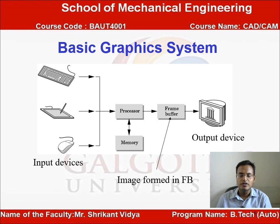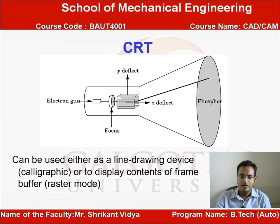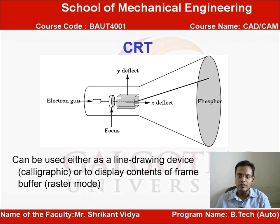The basic graphic system consists of an input device, a processing part, and an output device. Input devices include a keyboard, mouse, and plotter. Output devices include a monitor, plotter, and printer. Between input and output there are intermediate devices like a processor, memory, and frame buffer. For output, the CRT (cathode ray tube) is used to display the output, and we can use either a line drawing device or a display.